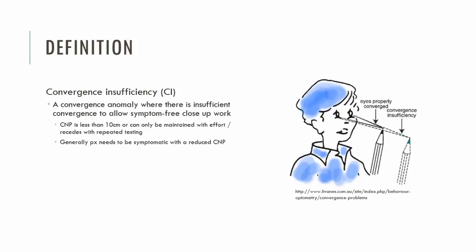In order for the patient to be diagnosed with CI, they must have the reduced convergence near point with symptoms. Other things that may happen is that the patient may demonstrate a good CMP initially, but with repeated measurement it begins to recede — so these patients are having difficulty maintaining convergence.